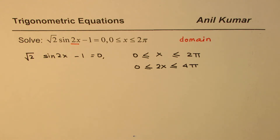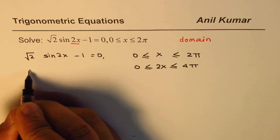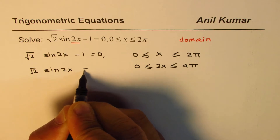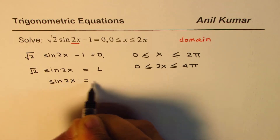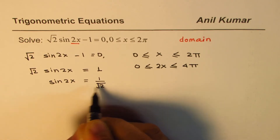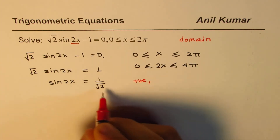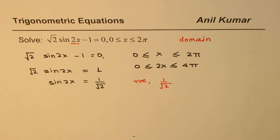Keeping this in mind, you can pause this video, answer the question, and then look into my suggestions. Now let's solve this. Taking 1 to the right side, we get √2 sin(2x) = 1, so sin(2x) = 1/√2. We are looking for two things: sine is positive, and we are looking for the value 1/√2, which we can get from special triangles.